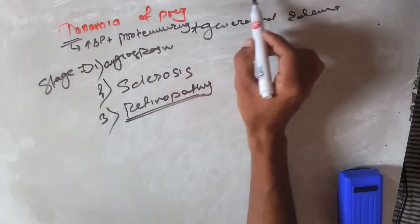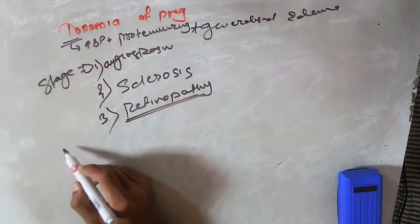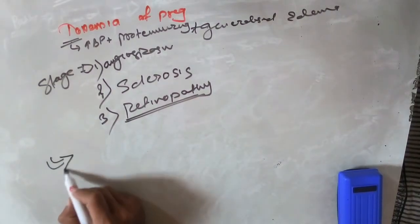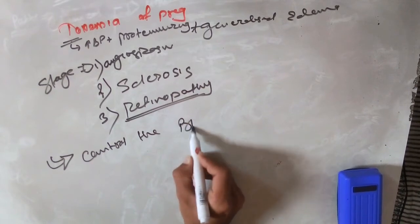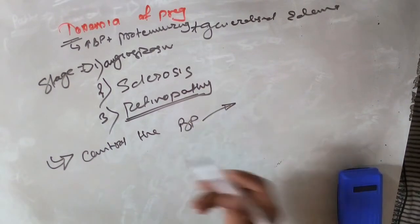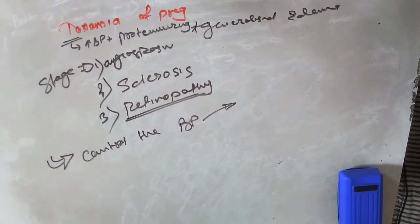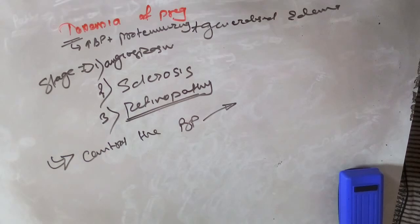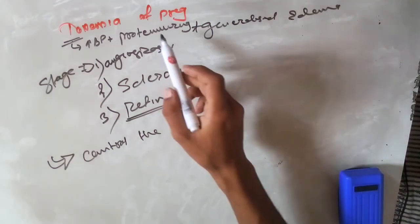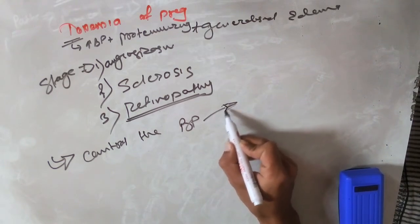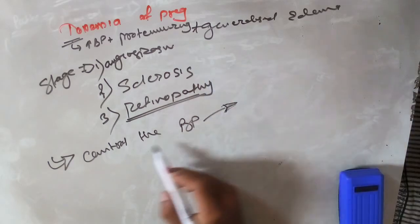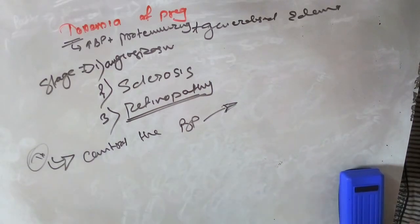The most important treatment for hypertensive retinopathy and toxemia of pregnancy is to control blood pressure by administering antihypertensive drugs according to the patient's state. Additional measures include salt restriction and, in pregnancy, ensuring complete antenatal care visits. The primary treatment modality remains antihypertensive therapy.